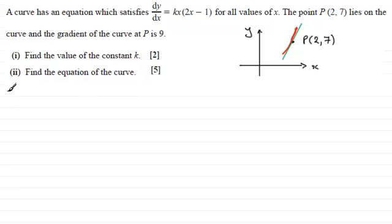And to do this, what I'm going to do is take the fact that dy/dx equals kx multiplied by 2x minus 1. And we know then that when x equals 2, we know that the gradient given by dy/dx is 9. So by substituting that into this equation we should be able to find out what k is.